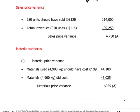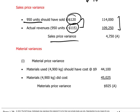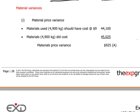For the sales price variance, there is no distinction between absorption and marginal costing. We take the actual units sold — 950 — and note they should have sold at $120 per unit but actually sold at $115. The price difference of $5 multiplied by 950 units gives a sales price variance of $4,750 adverse.